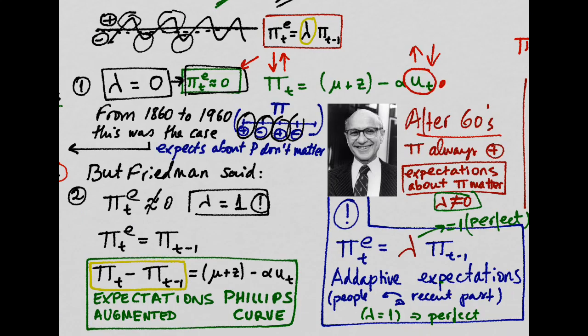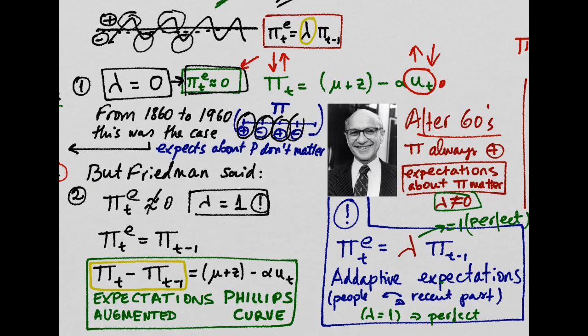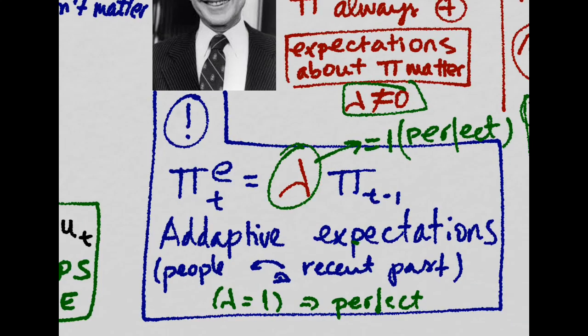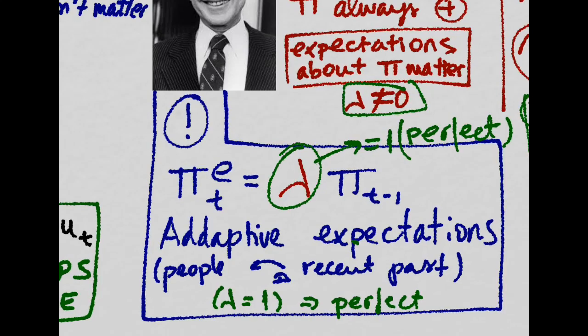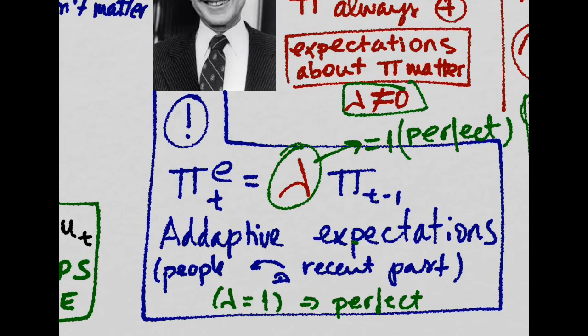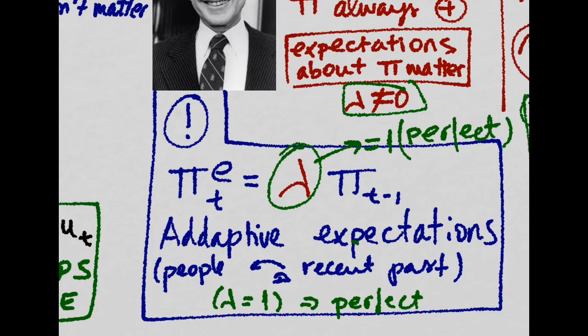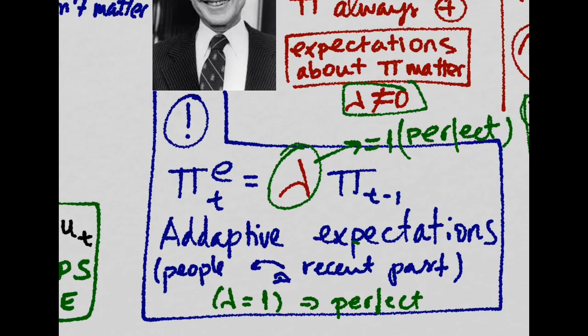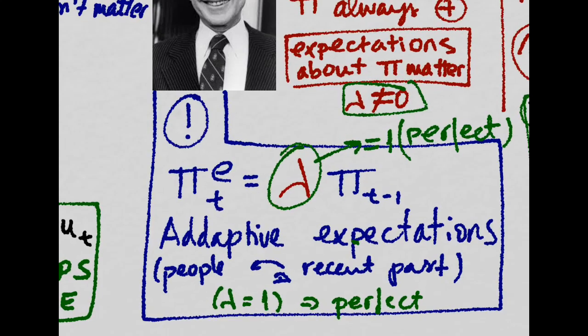So, Friedman took the idea to the extreme and set lambda to be one, meaning you have perfectly adaptive expectations. People will always look back at their recent past in order to forecast the inflation in this period.